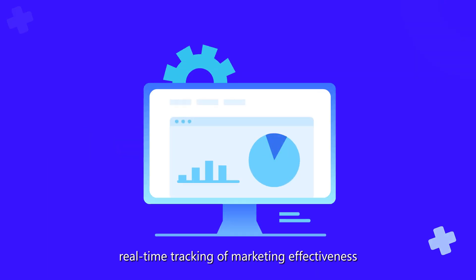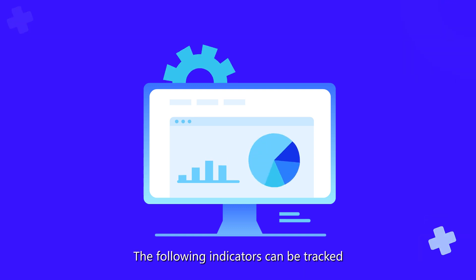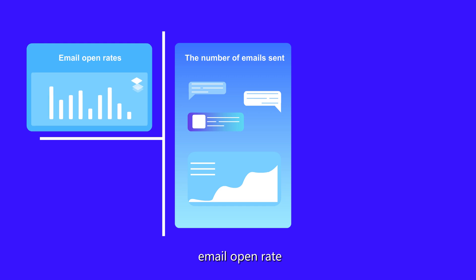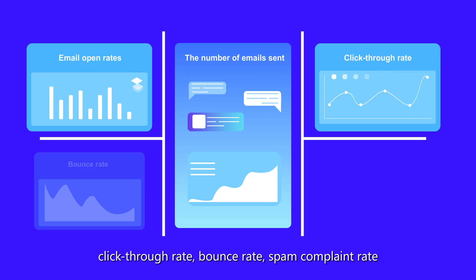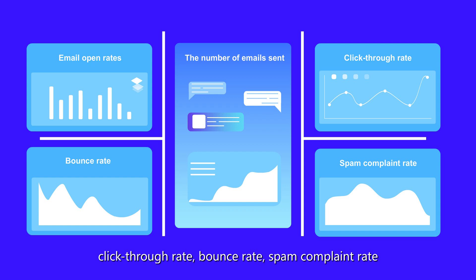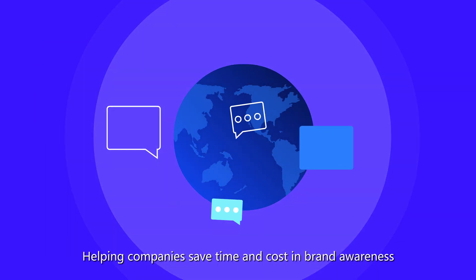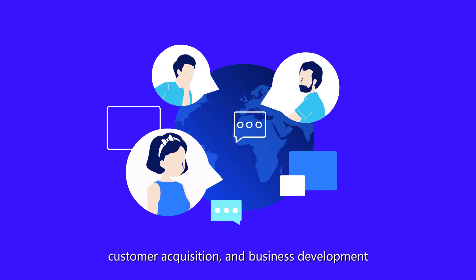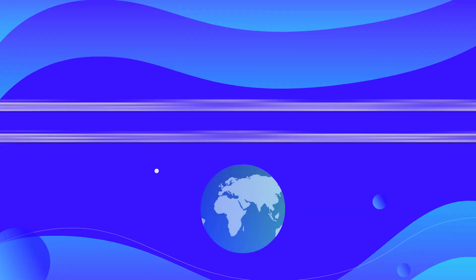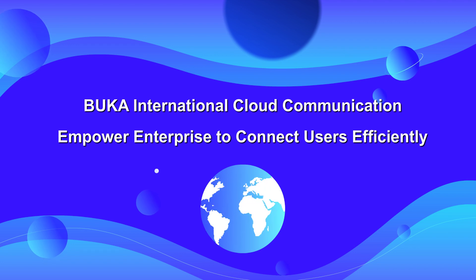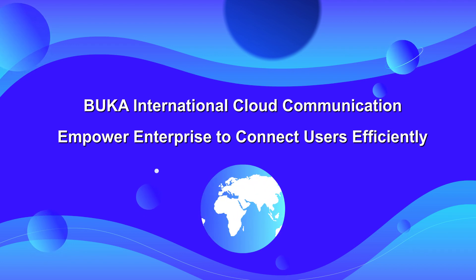Real-time monitoring and traceable data: the statistics function supports real-time tracking of marketing effectiveness. Tracked indicators include number of emails sent, open rate, click-through rate, bounce rate, and spam complaint rate — helping companies save time and cost in brand awareness, customer acquisition, and business development. Buka International Cloud Communication empowers enterprises to connect with users efficiently.